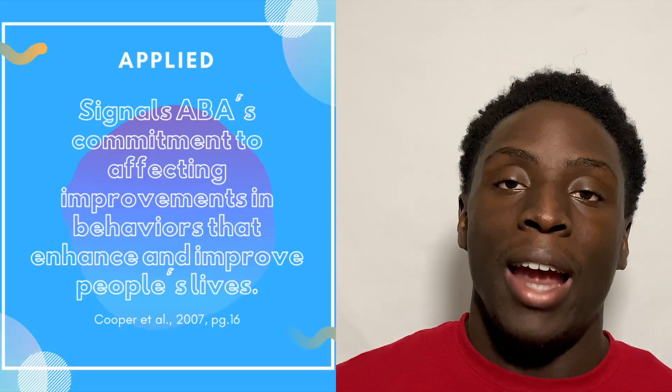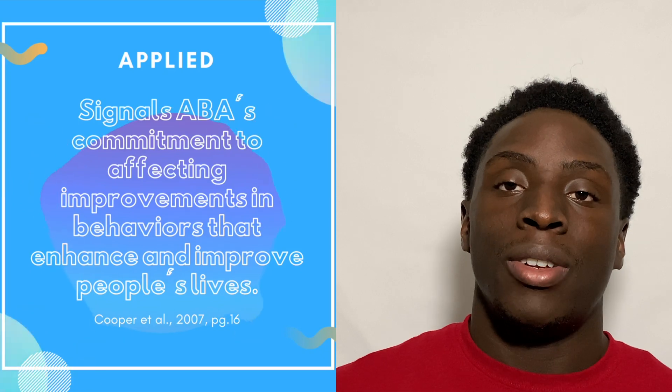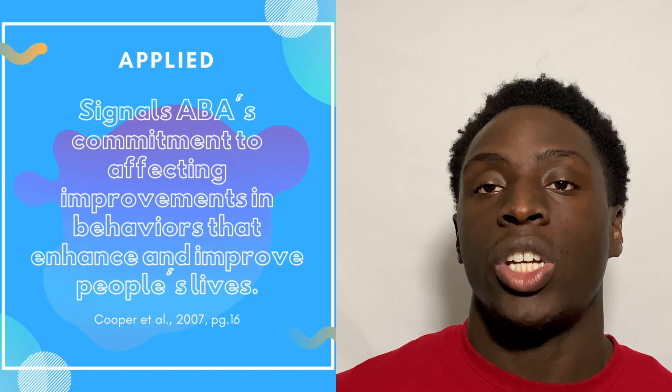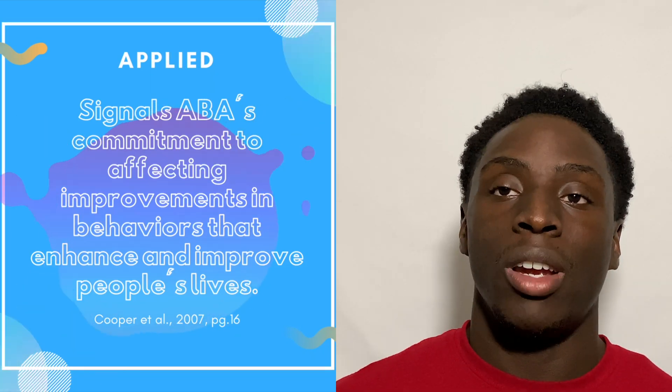Now on to our applied dimension of ABA. We've chosen the target behavior — it's observable and measurable. When we're defining the applied dimension, we're looking at the result of behavior change and ensuring that it enhances and improves the everyday life of our learners.